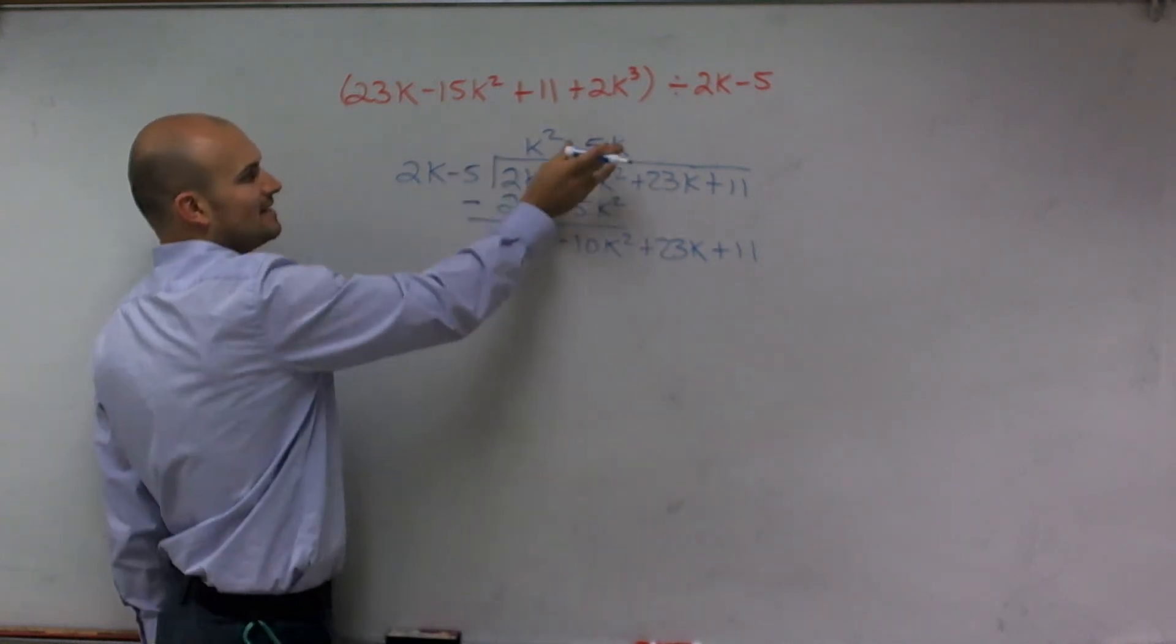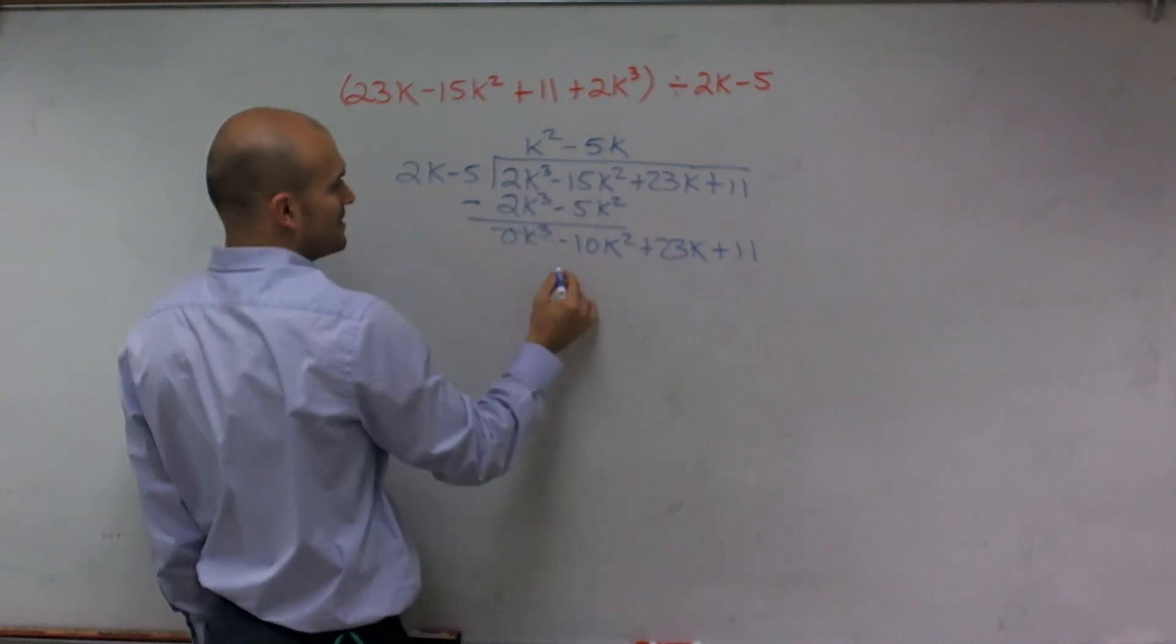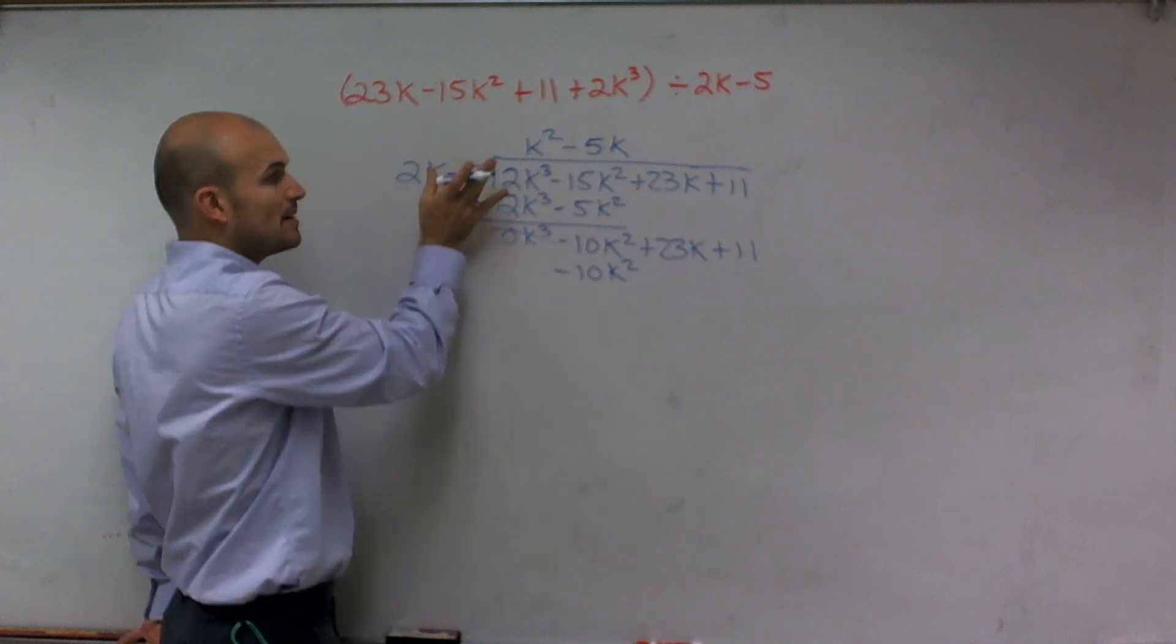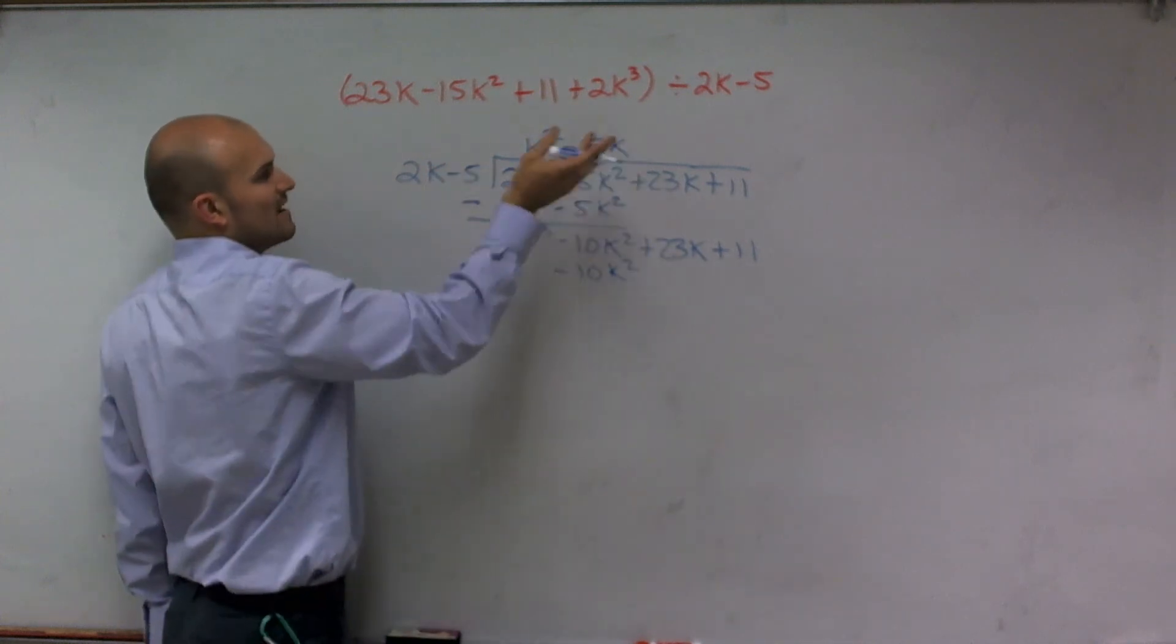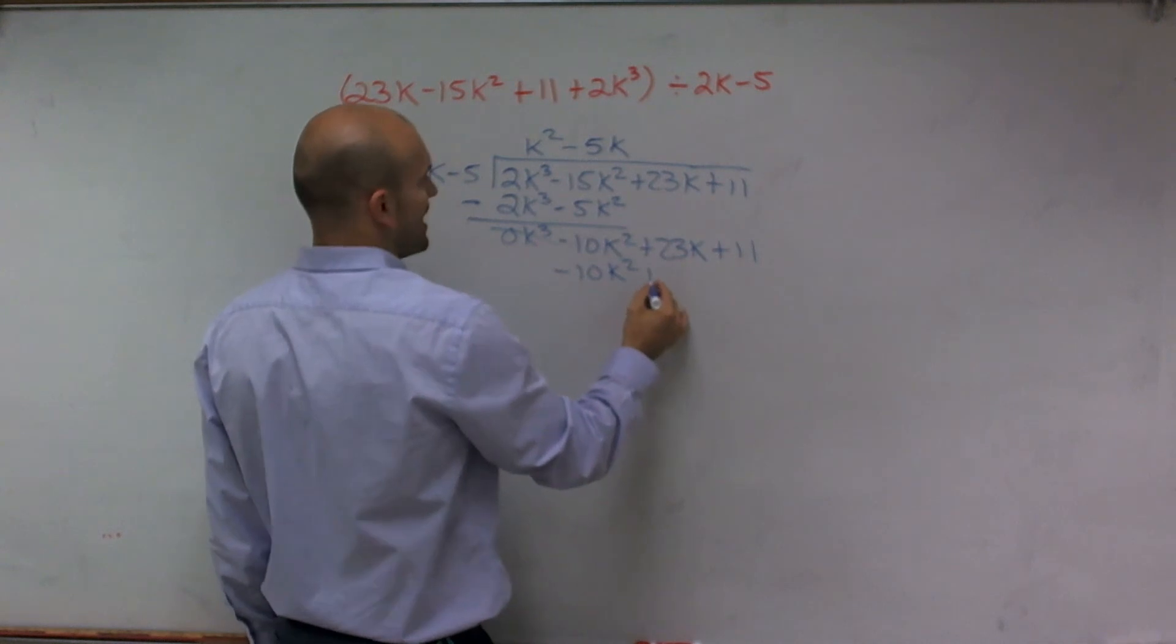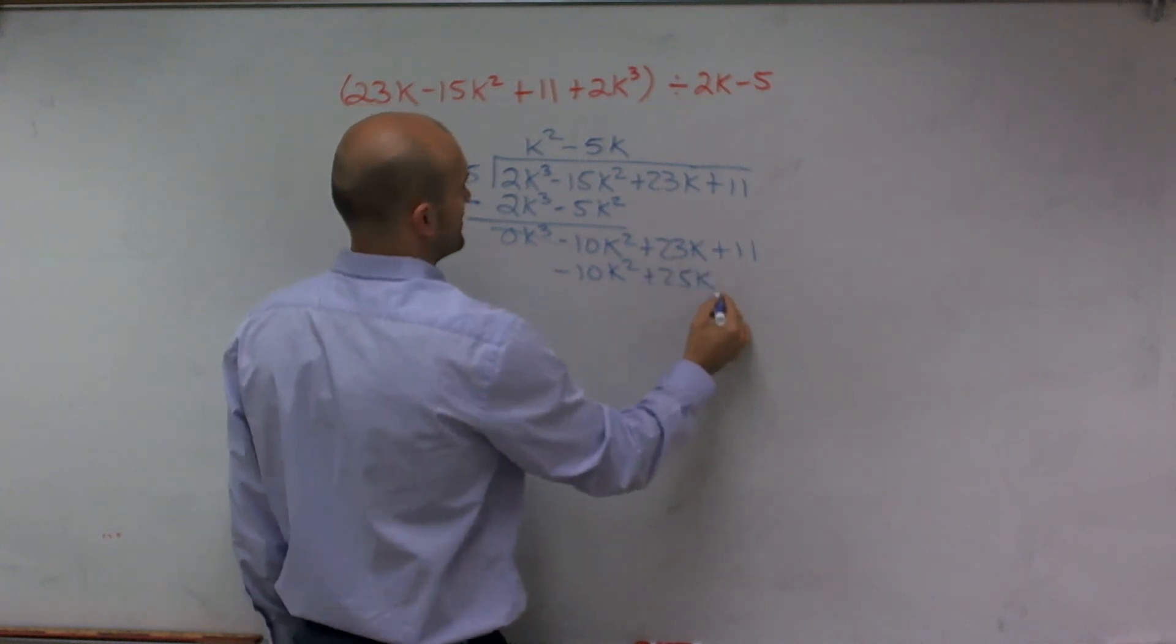Negative 5k times 2k, which gives you negative 10k squared. And then, I have to make sure you multiply by both terms of your binomial. Negative 5k times a negative 5 is going to give me a positive 25k.